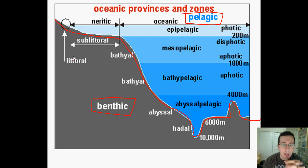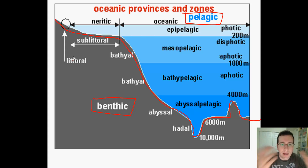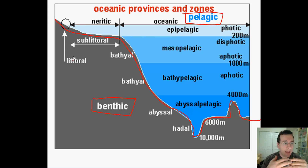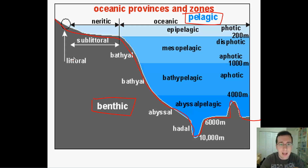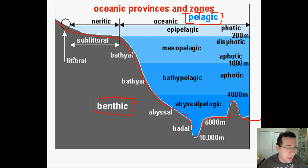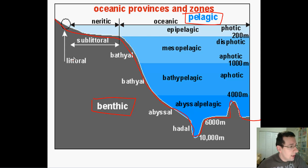The intertidal zone is actually very interesting because it is the area of the ocean that sees the most change in abiotic factors over the course of the day. When the tide comes in it's underwater; when the tide goes out it's above water. So you go from an aquatic environment to a land environment multiple times a day depending on the tides. This is the area that sees the greatest change in abiotic factors throughout the day.